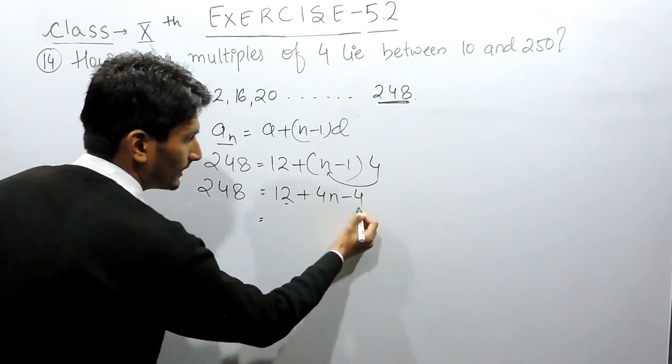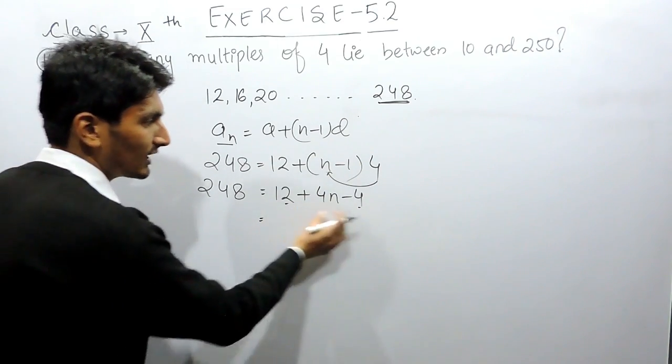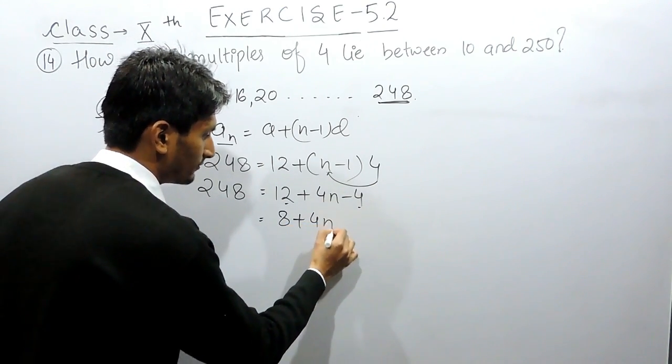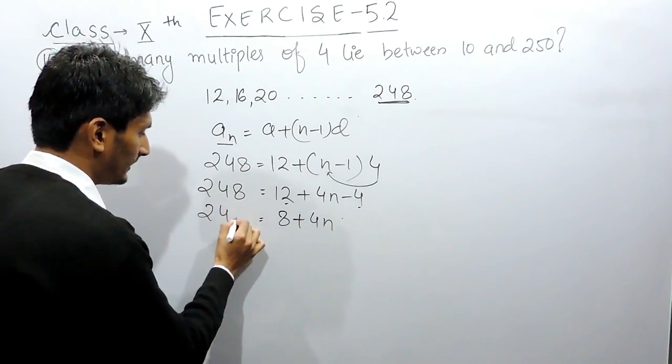Now we can further solve this. These can be solved because these are constants. So 12 minus 4 is 8. This is 4n. And this is 248.